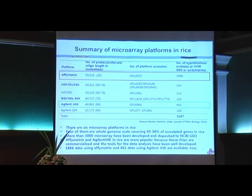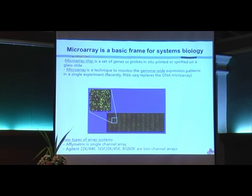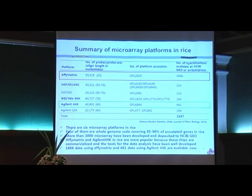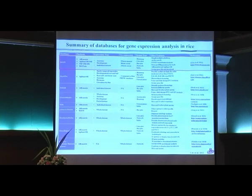Most of these platforms can cover 80 or 90 percent of the annotated genes in rice. There are more than 30,000 array datasets available, and they are all available from NCBI GEO. Among them, Affymetrix and Agilent in rice are more popular because these chips are commercialized and the tools for data analysis have been well developed. We are mostly using data from these two array platforms.